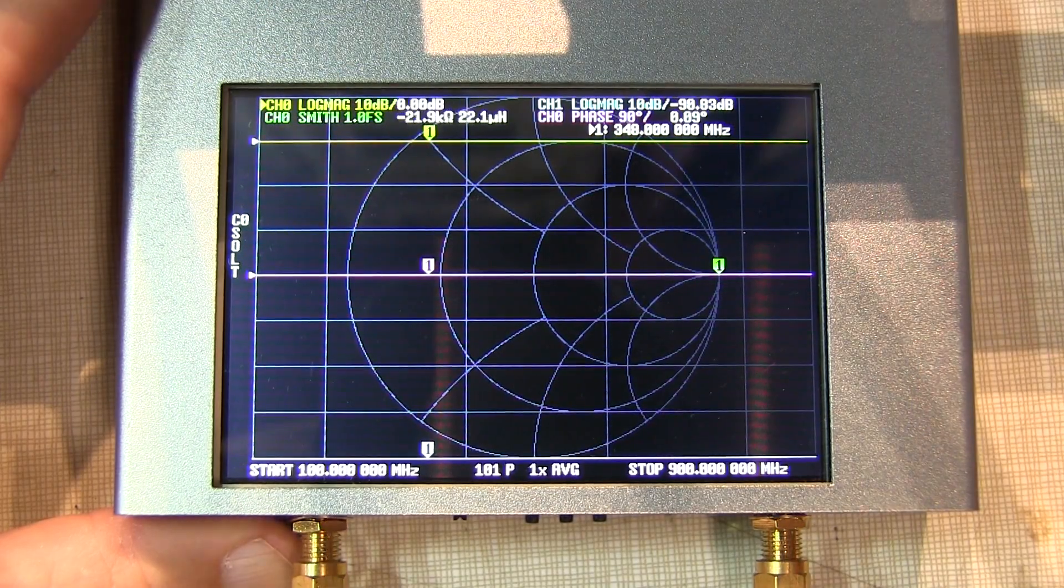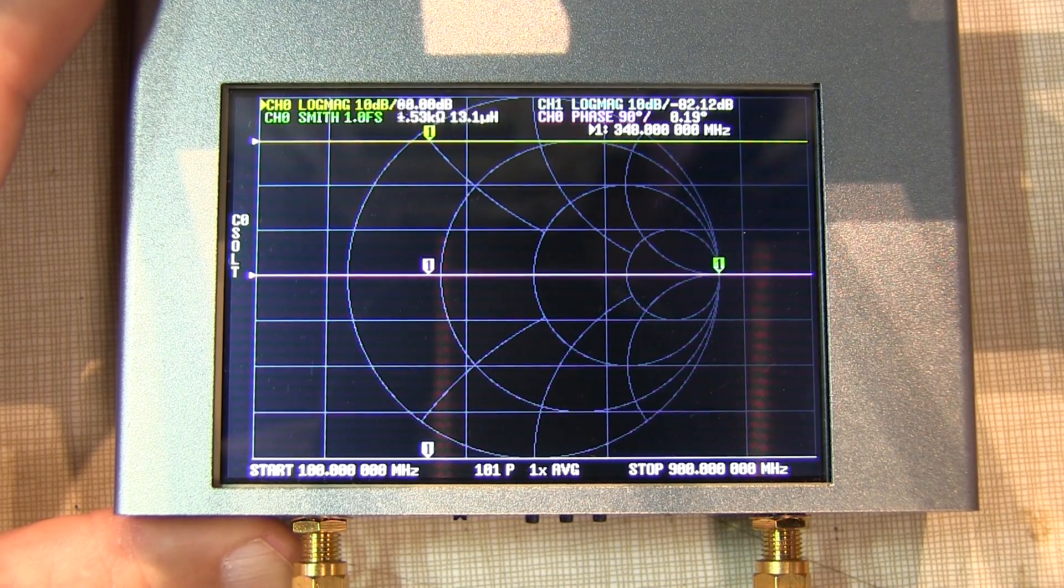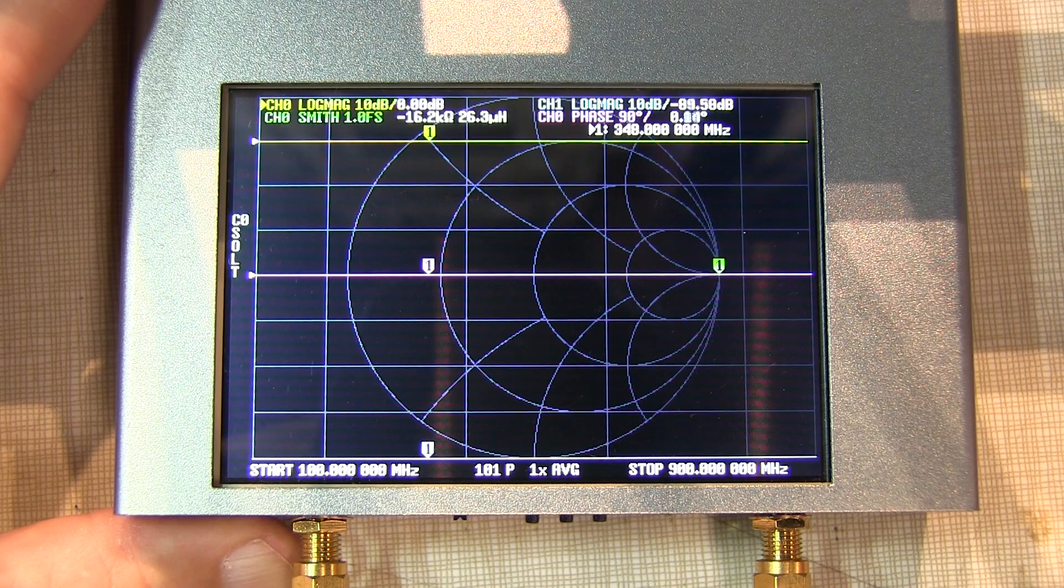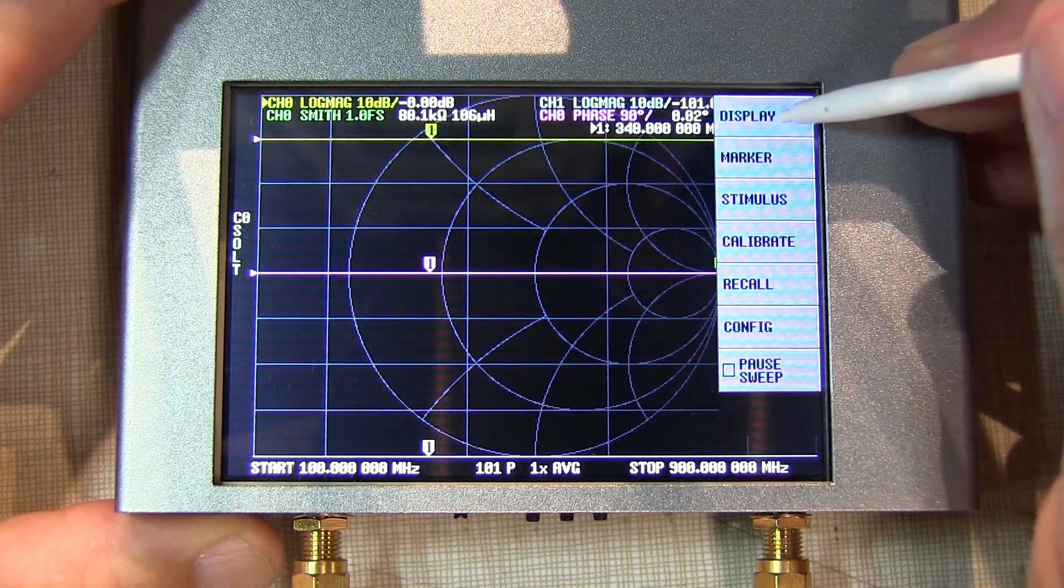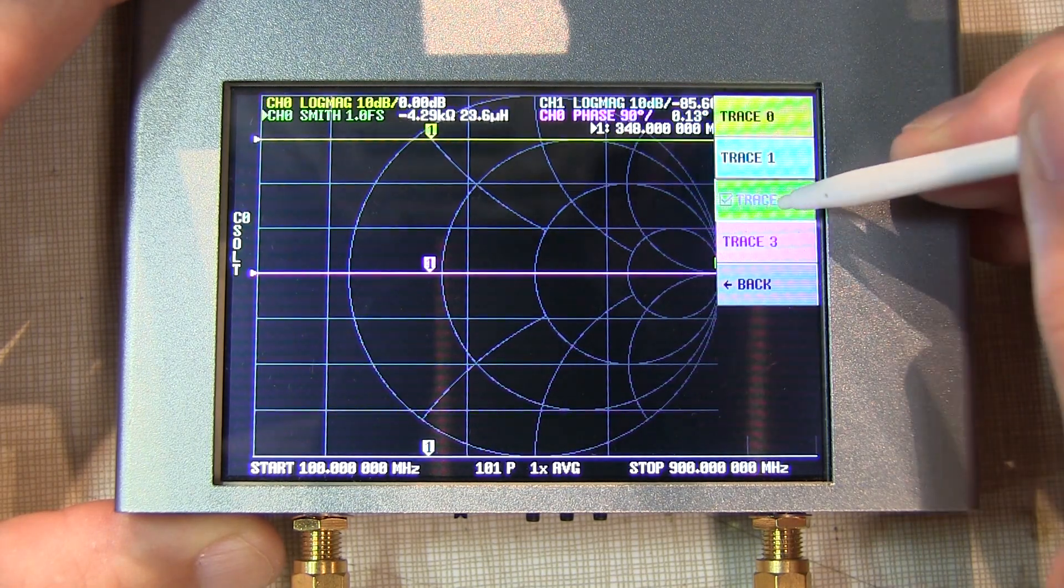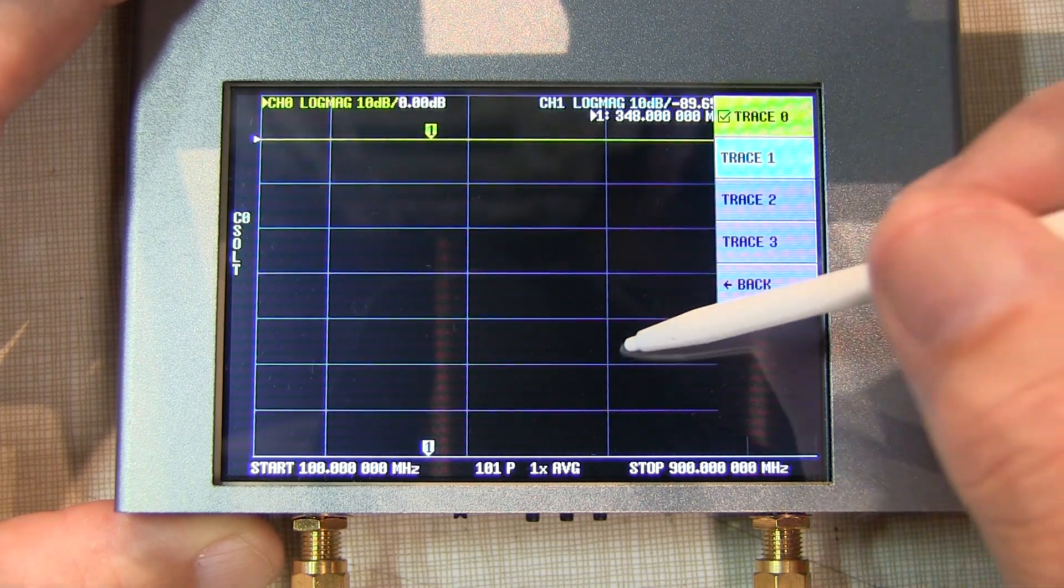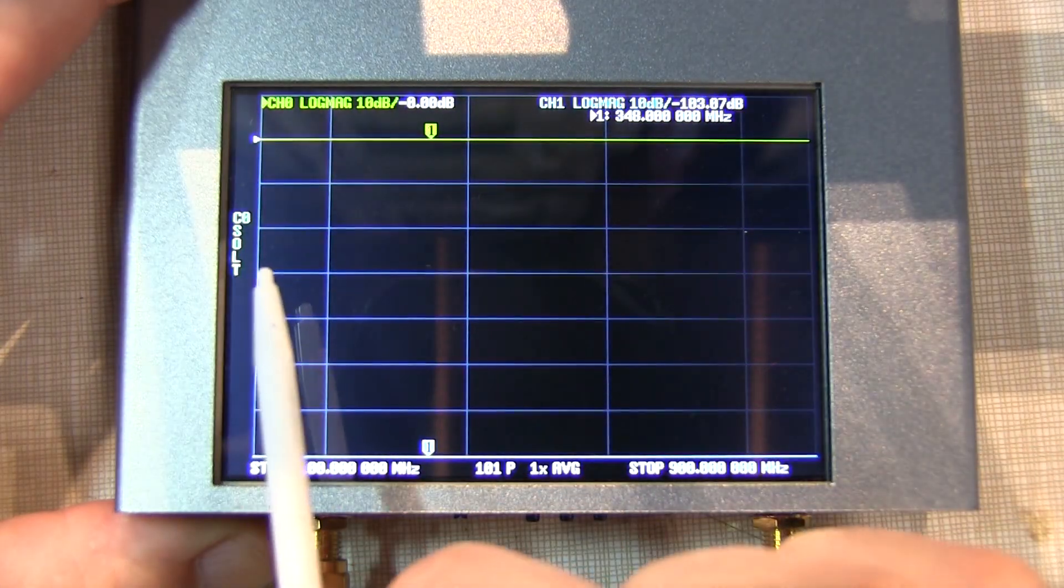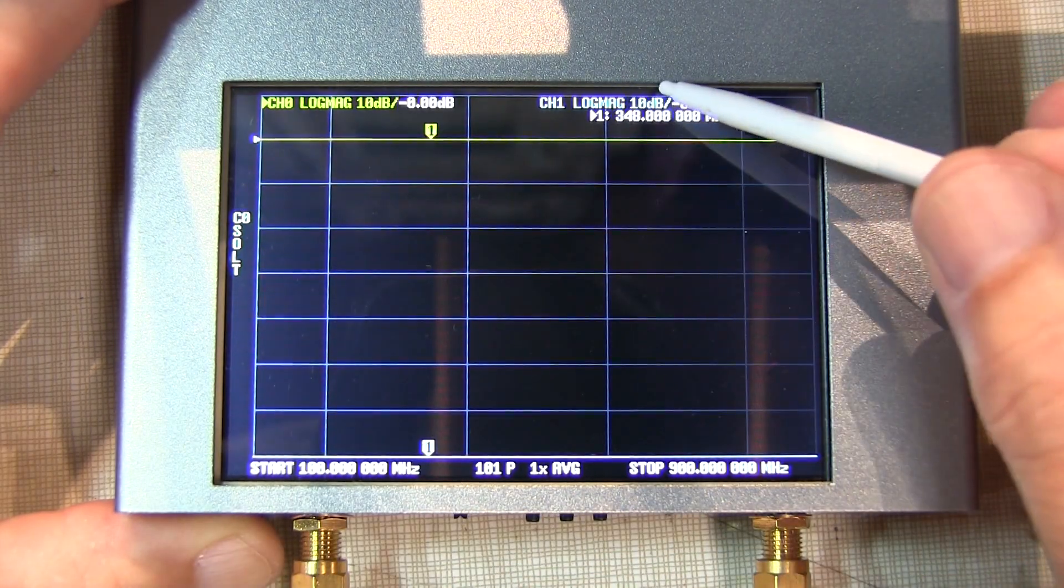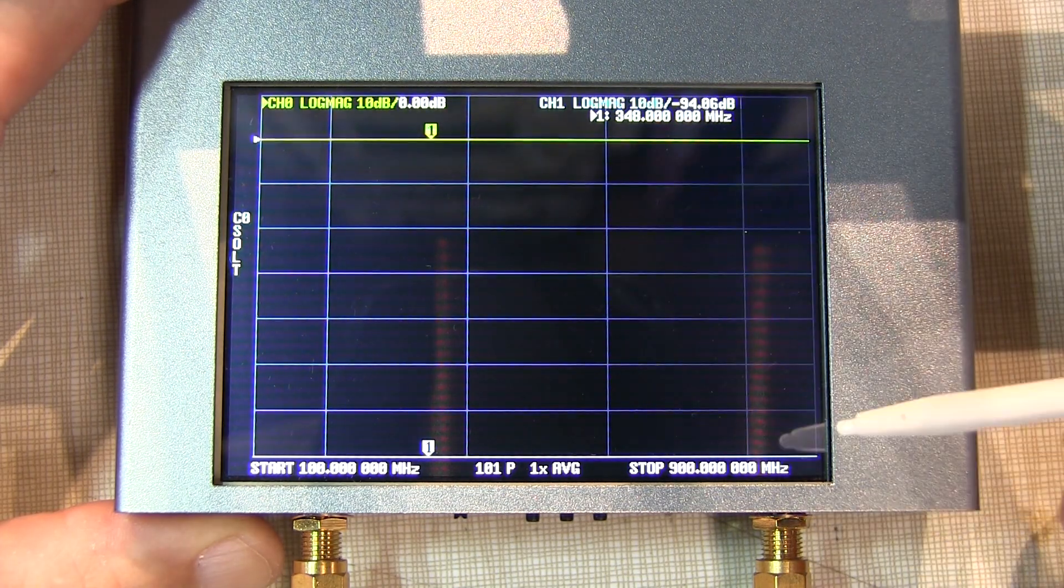To characterize the filter, we really only need two traces: S11 to look at the return loss of the bandpass filter and S21 to look at the depth and position of the notch for the notch filters. Let's turn off the traces we don't want - trace number 2, the smith chart display, and trace number 3. Now we're left with the log mag of S11 and the log magnitude of S21.